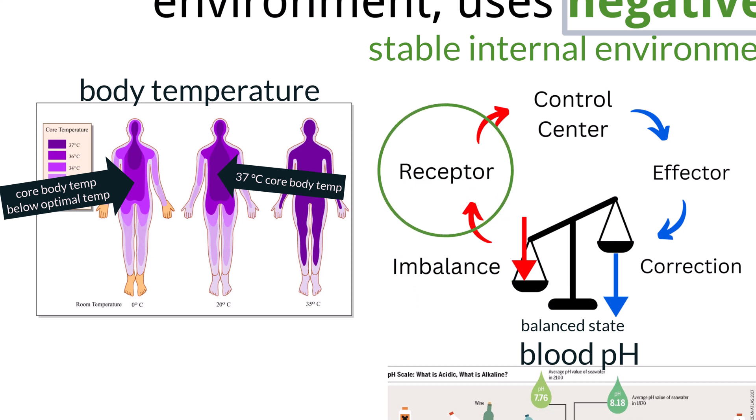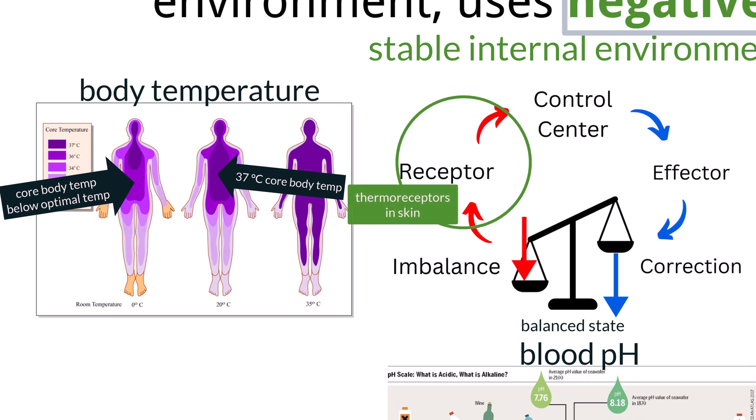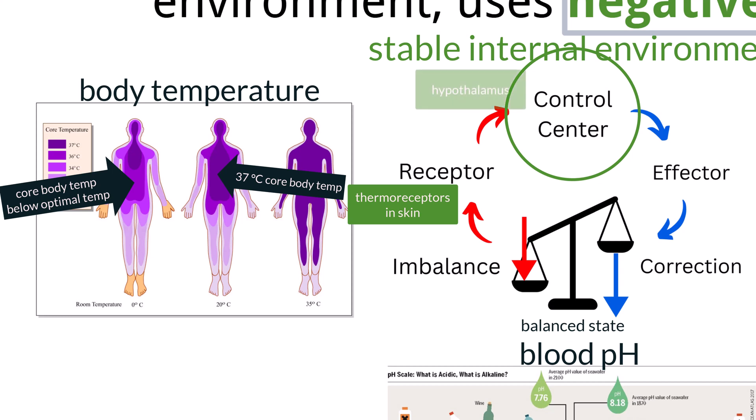First, a receptor detects a change in a specific internal condition, called a stimulus. For example, thermoreceptors in the skin detect a drop in temperature. The control center receives input from the receptor and processes the information. In the case of temperature regulation, the hypothalamus in the brain acts as the control center. It compares the current temperature to the normal set point and decides on an appropriate response.